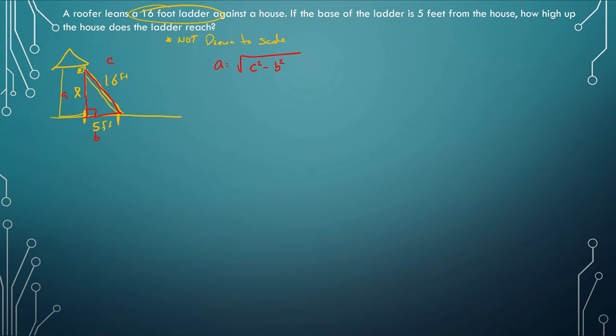x is what I'm calling the height of the house that I want to get to. c is 16 and b is 5. So once again, 16 times 16 is 256, 5 squared is 25, and so when we subtract that we get 231. I believe that's a prime number, so that is as far as we can take it. We can say that the ladder is going to reach the square root of 231 feet high, which brings it to almost about 15.2 feet high.